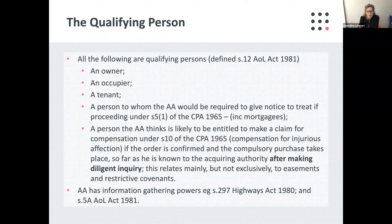This relates mainly, but not exclusively, to easements and restrictive covenants. In most cases it's obvious who the interested persons are, but this final category is a capsule that includes those not only whose land is taken, but those who are entitled to compensation under Section 10 even though land is not taken. The acquiring authority has information gathering powers — for example Section 297 of the Highways Act 1980 and Section 5A of the Acquisition of Land Act 1981 — and these can and should be used to ensure that everyone is captured. I'll now hand back to Harriet for confirmation.